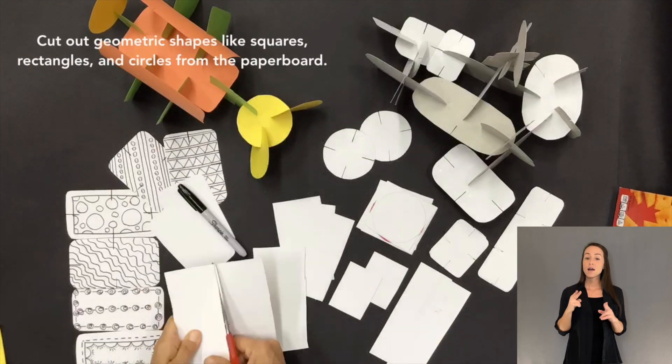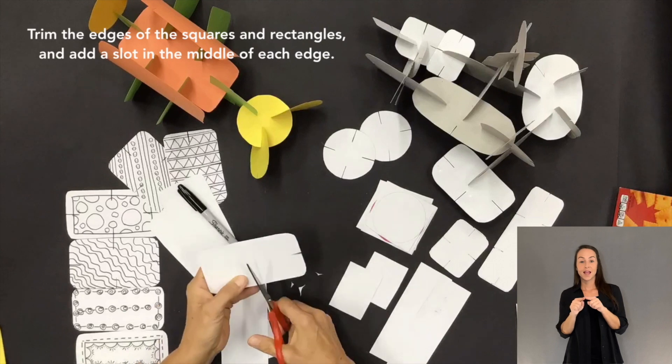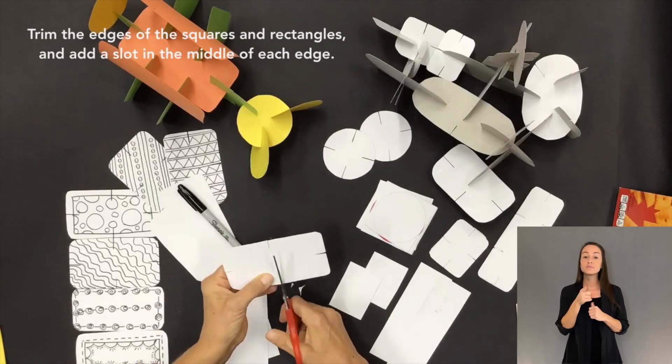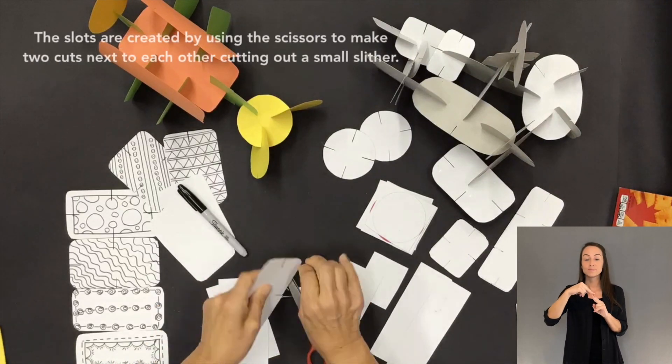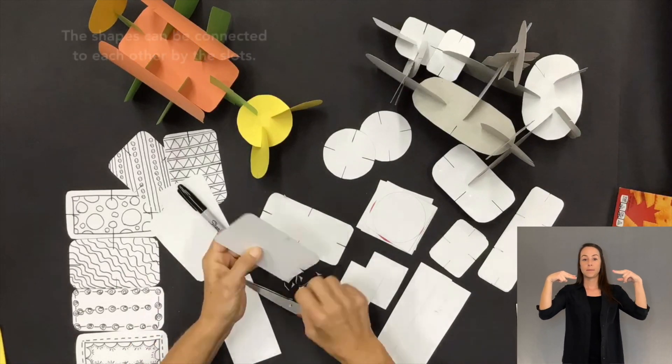Cut out shapes like squares, rectangles, and circles. Trim the edges of the squares and rectangles and add a slot in the middle of each edge. The slots are created by making two cuts next to each other, cutting out a small sliver.